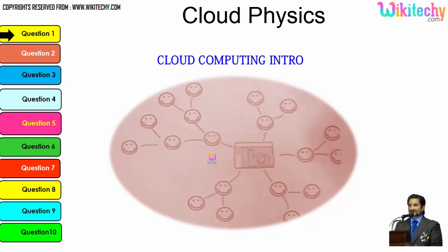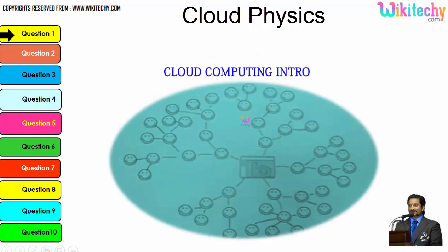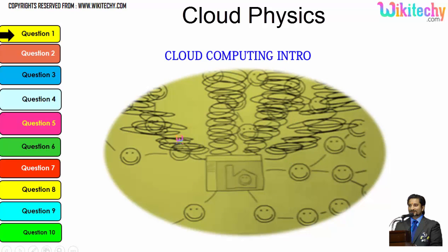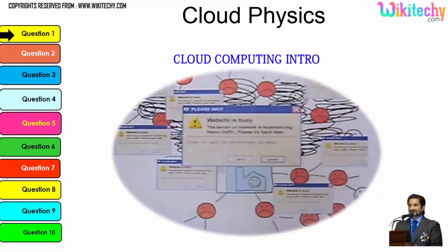Let's talk about the cloud computing intro. Here is a computer which is connected to a server, and this server is monitoring that computer. Once the network becomes bigger, the monitoring becomes tougher. If more computers are added, the network gets really large and the monitoring system becomes really slow. There is a possibility that the network crashes or the server couldn't monitor specific networks, leading to lots of errors.